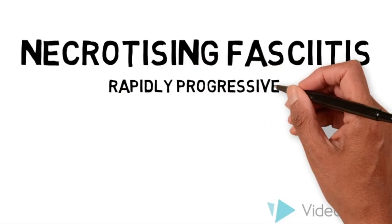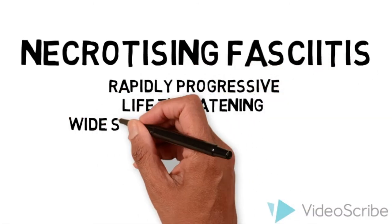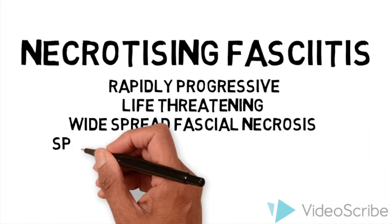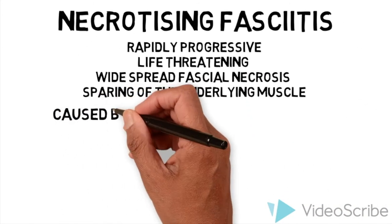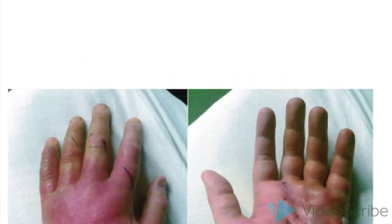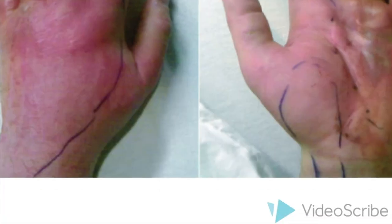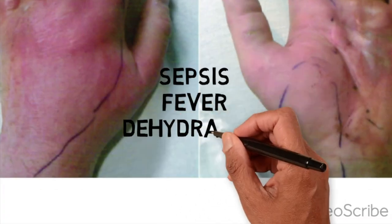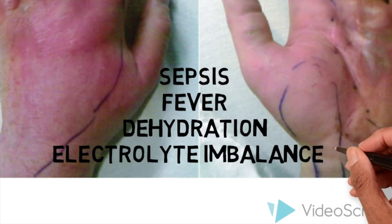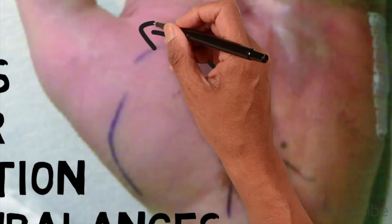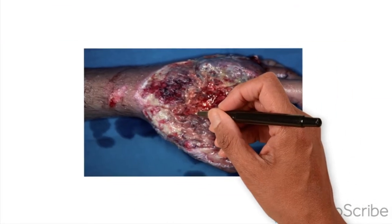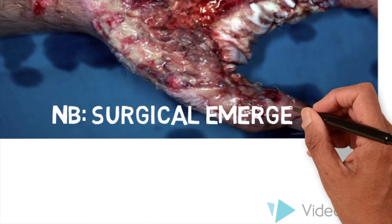Necrotizing fasciitis is a rapidly progressing, life-threatening soft tissue infection. It is characterized by widespread fascial necrosis with relative sparing of the underlying muscle. It is caused by a toxin-producing bacteria. When it initially presents, the symptoms may be worse than the clinical appearance. The patient may be septic, have fever, dehydration, and electrolyte imbalances. However, when one marks the erythema, it rapidly progresses and can cause necrosis of the underlying skin. This is a surgical emergency.